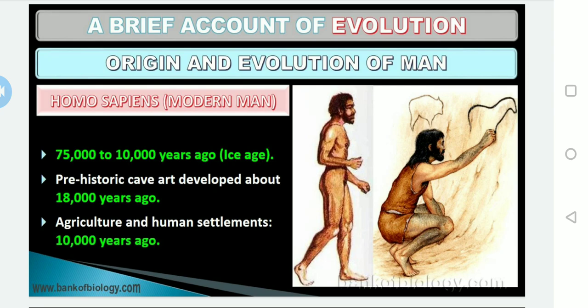Homo sapiens arose during the Ice Age between 75,000 to 10,000 years ago in Africa and moved across continents. They developed cave art about 18,000 years ago. The origin during the Ice Age is very important to remember. We still have prehistoric cave art developed by these Homo sapiens or modern man.